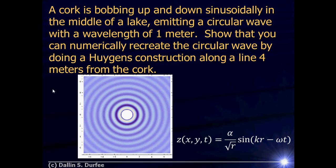It's a sine wave, where alpha is just some constant that tells us how big it is. The phase of our sine wave depends on time — it evolves in time — and it depends on where we are. It doesn't depend on X or Y alone; it depends on a combination of the two that says how far we are away from the cork. So it's k, the wave number, times how far away we are, R.